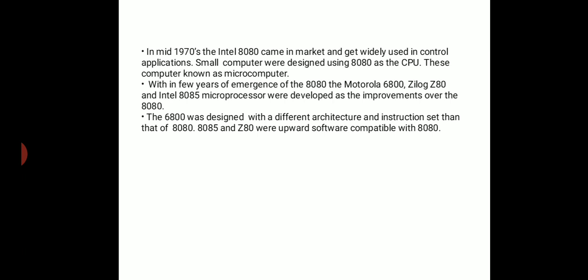The Motorola 6800 microprocessor was built using a different architecture. It had a different instruction set than the 8080. Different architecture means the way of building — the internal diagram, the motherboard layout — was different from what was used in the 8080.